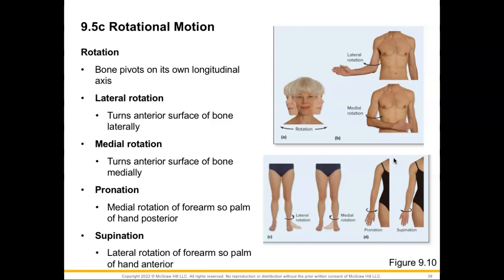Rotational movement is when a bone pivots on its own longitudinal axis. Looking at the humerus, pivoting the forearm outward shifts the humerus into lateral rotation, also known as external rotation, while turning the arm inward is medial rotation or internal rotation. This also applies to the lower limb — turning the foot out is lateral rotation, and moving the foot inward is medial rotation.